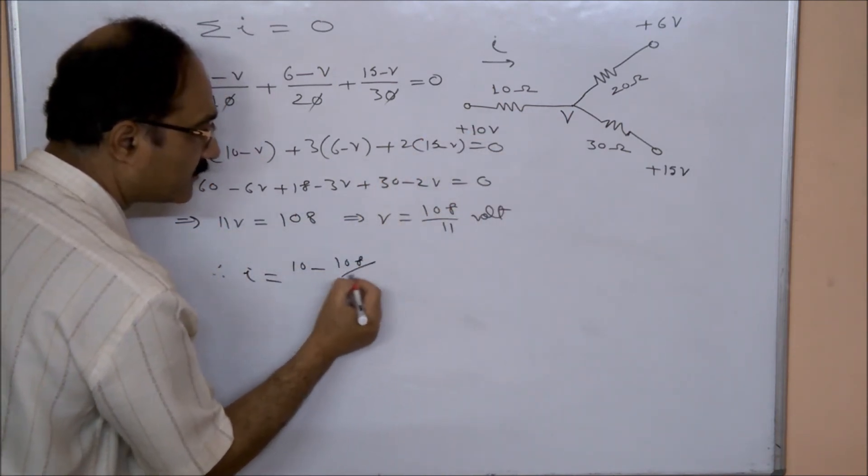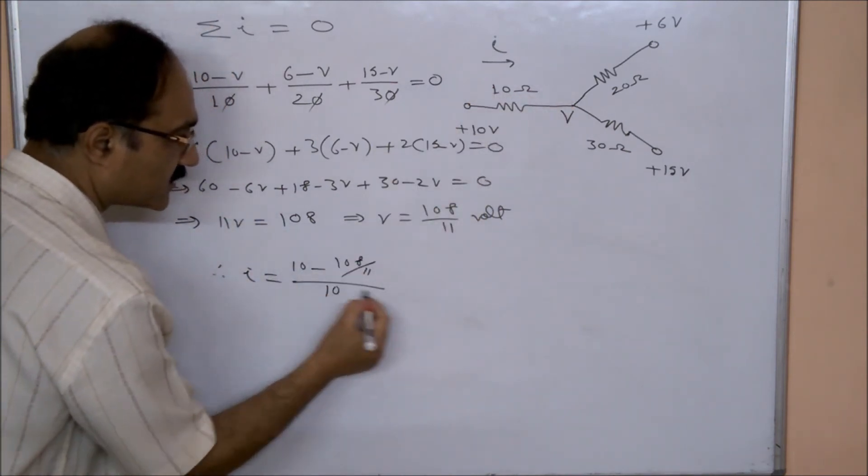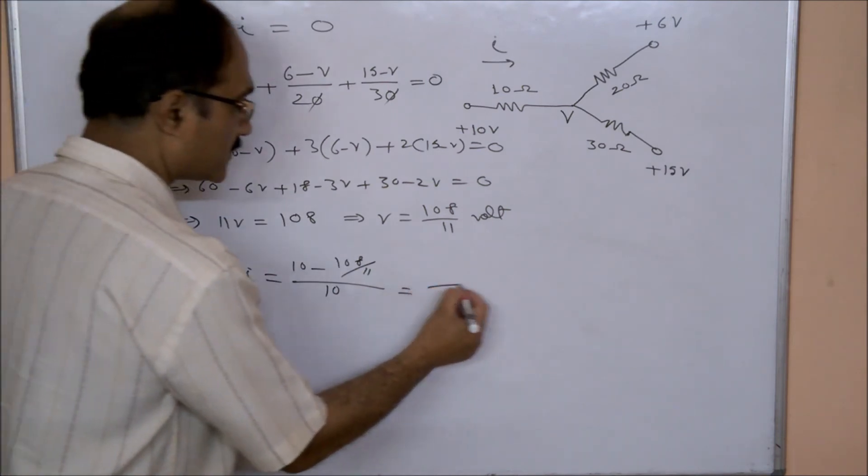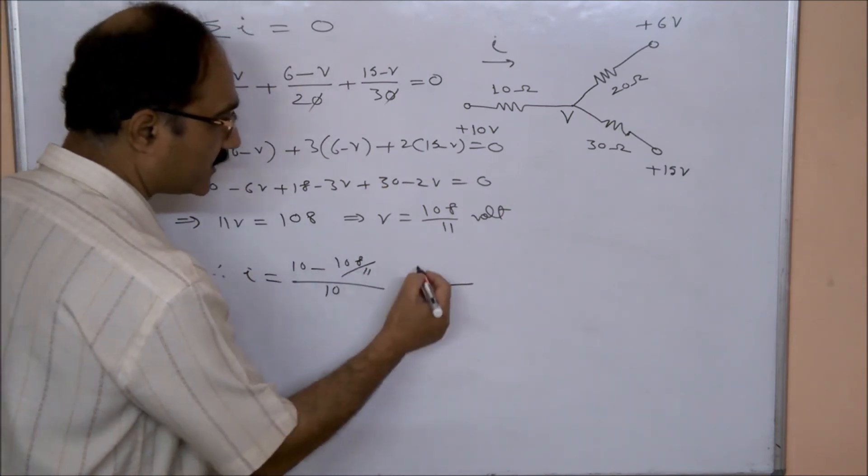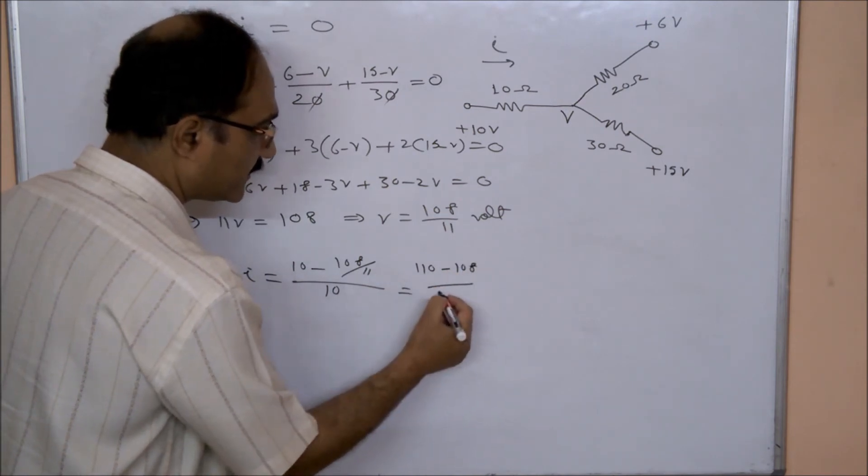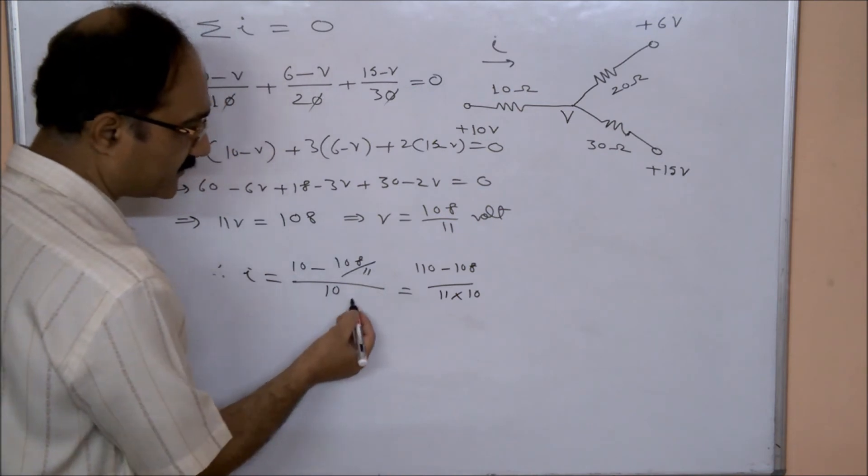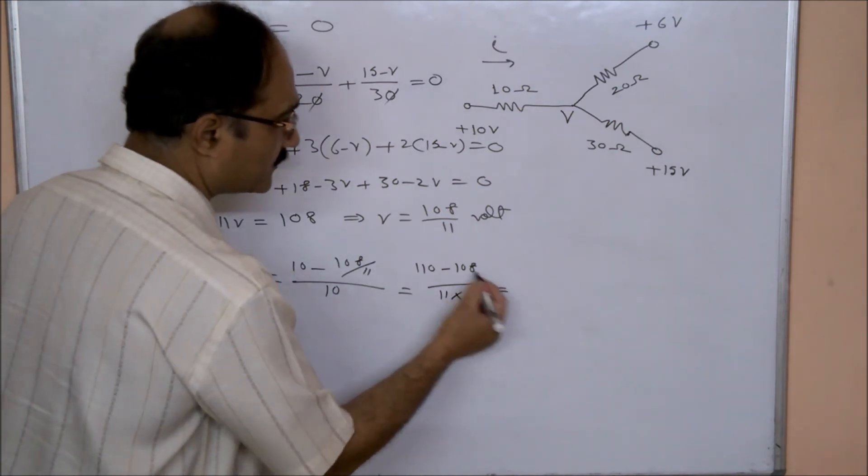So that means this will give 11 × 10 = 110 minus 108, divided by 11 × 10. This 11 will come down, so this will be 2 divided by 110...